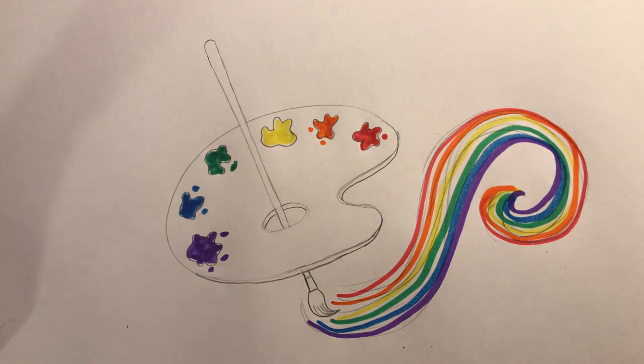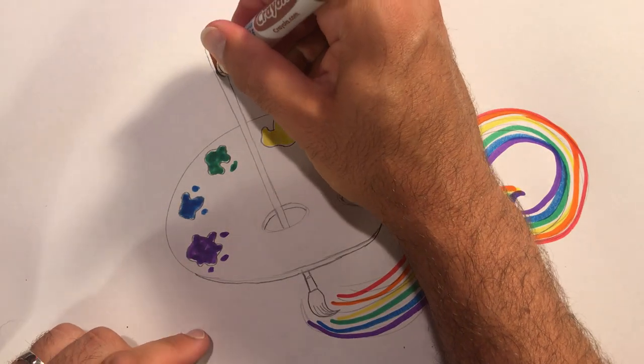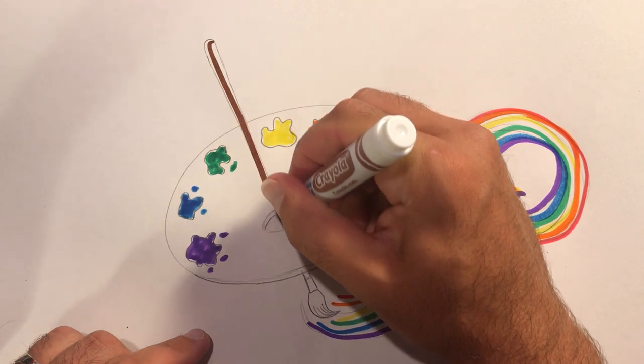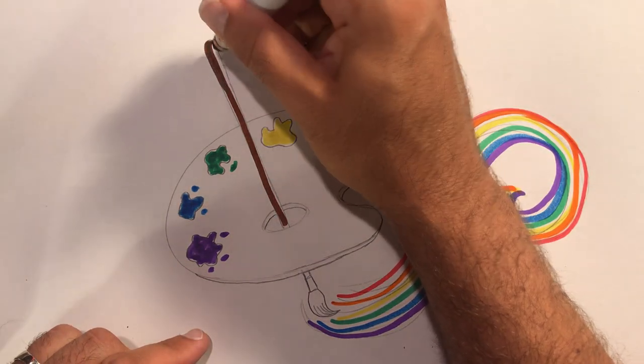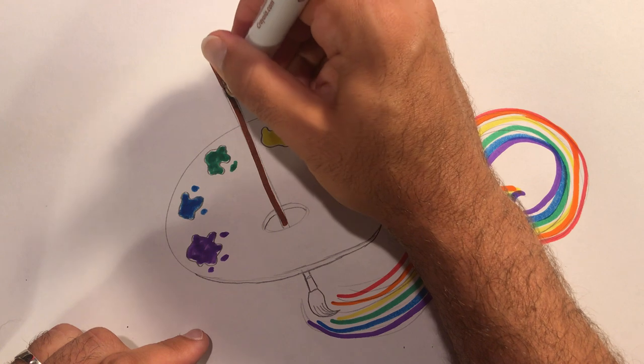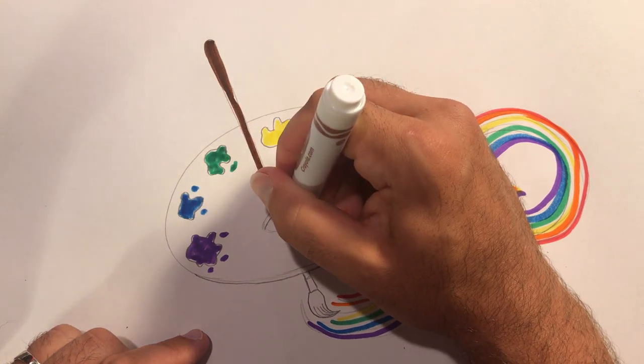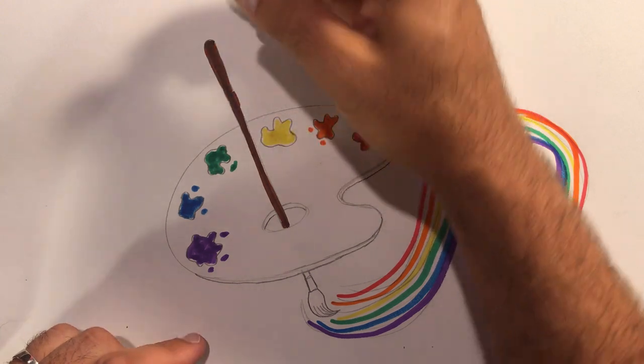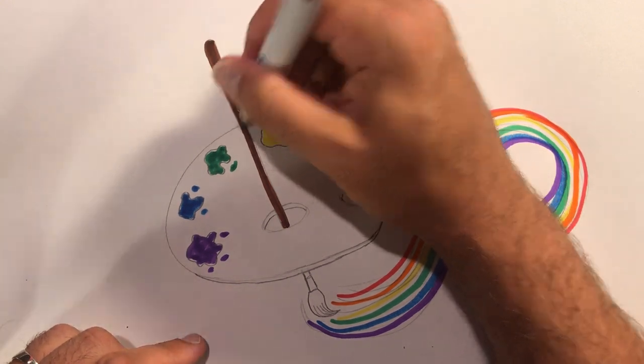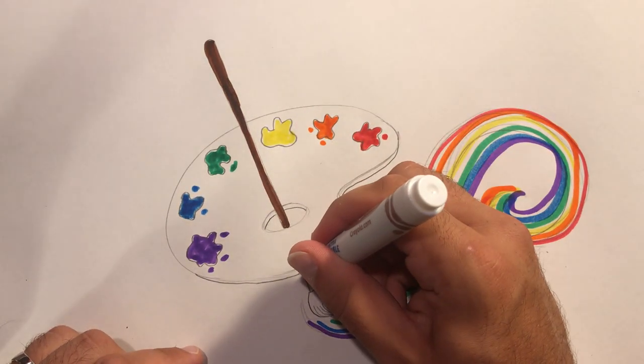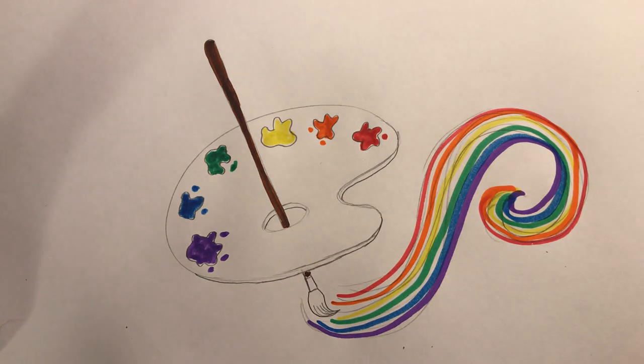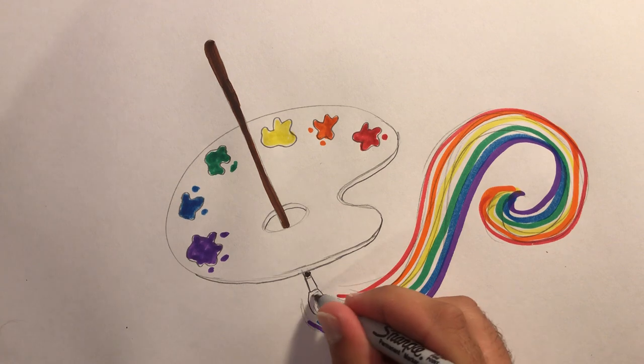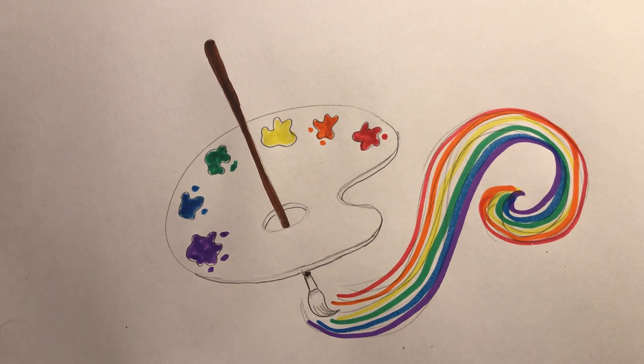Now, the handle would be brown. Brown or black. There's all sorts of different types of brushes and bristles. Bristles would be black.